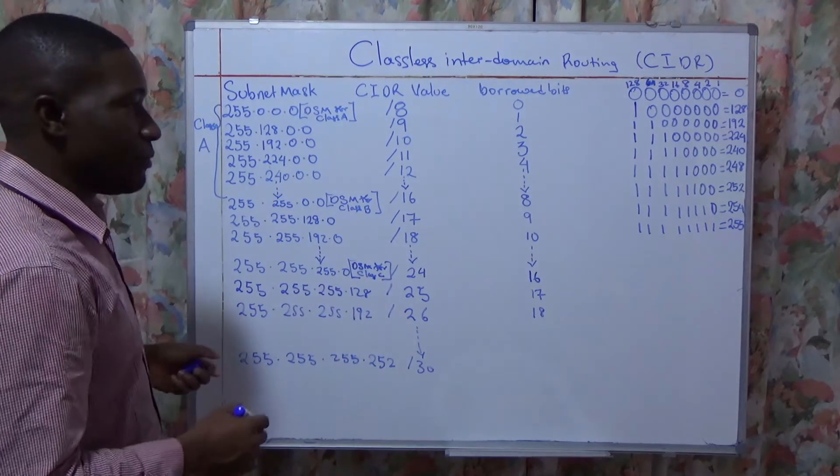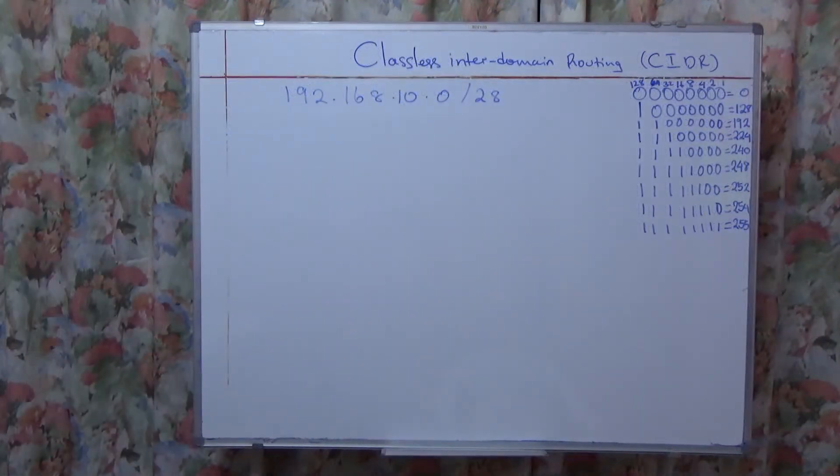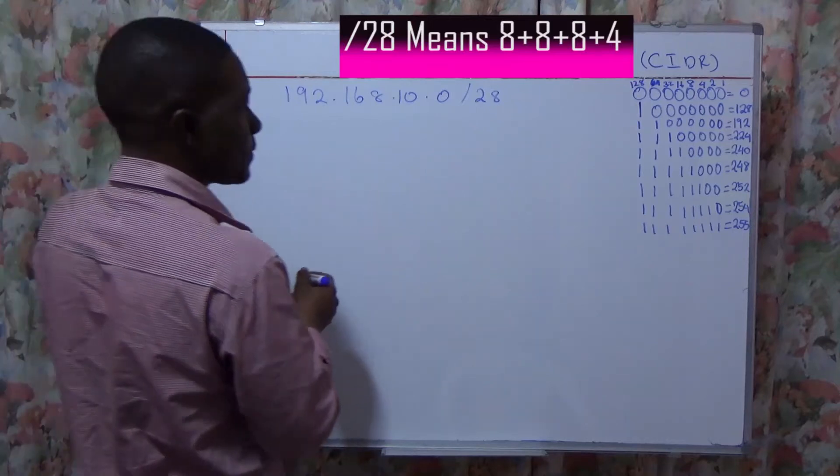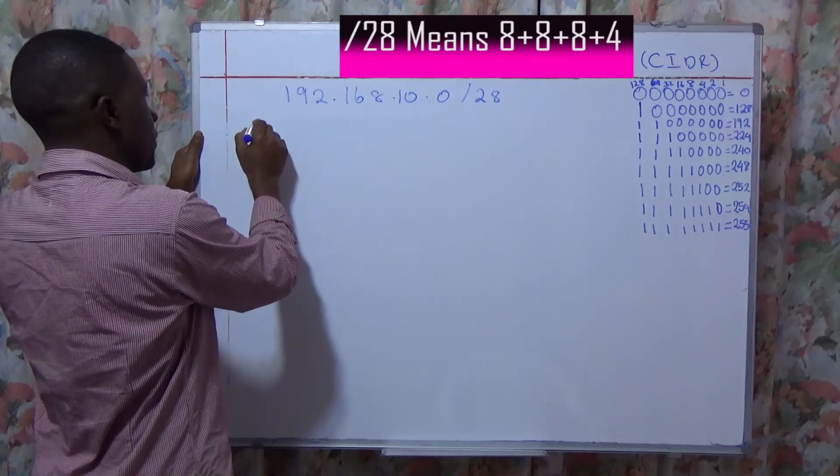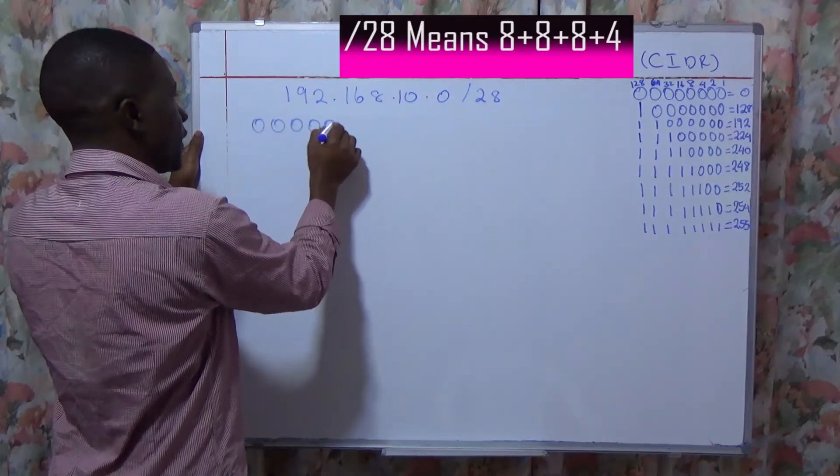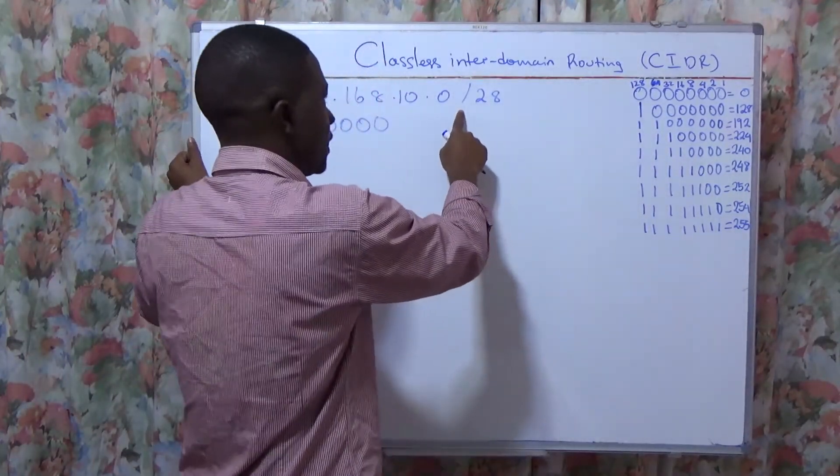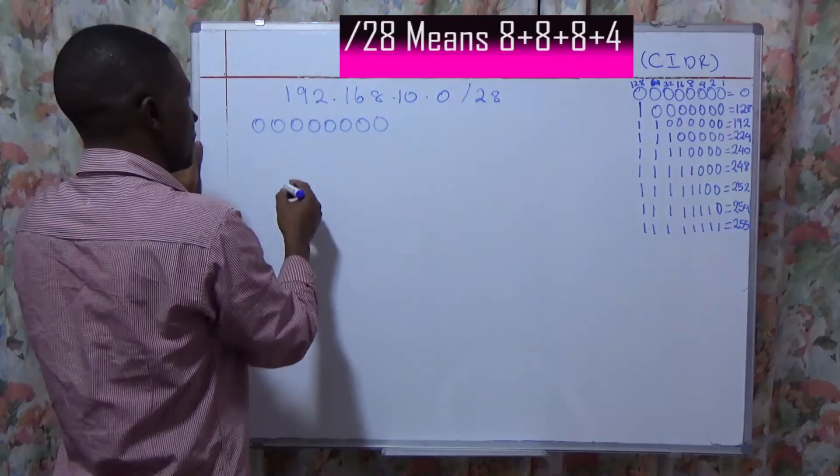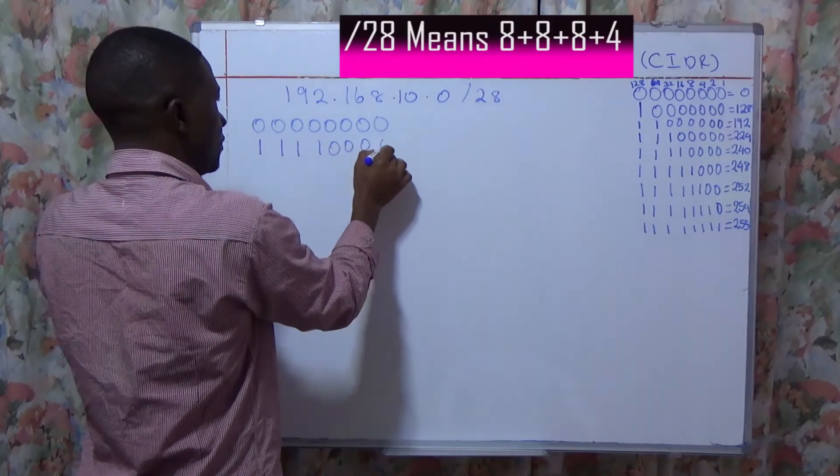Now let us see an example and we conclude. When you have the IP 192.168.10.0 /28, how do we perpetuate it? Now /28 ideally means that it will be 1, 2, 3, 4, 5, 6, 7, 8. And that means /28 is 1, 2, 3, 4, 1, 2, 3, 4.